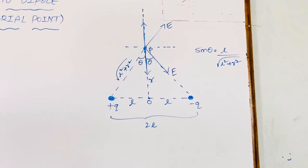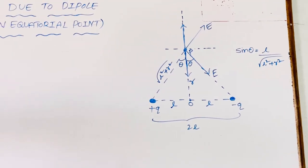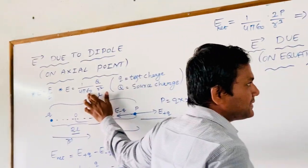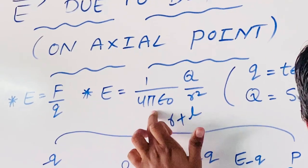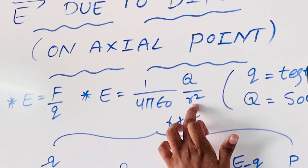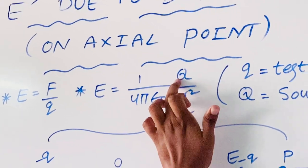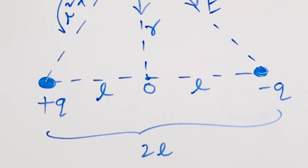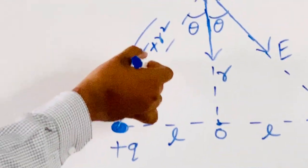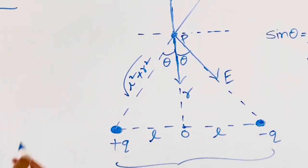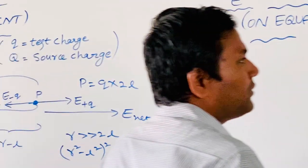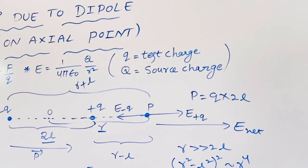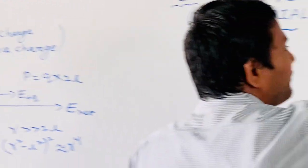In terms of magnitude, that can be calculated according to the formula discussed in the previous video: E = 1/(4πε₀) · Q/R². In this formula, Q is the magnitude of either plus Q or minus Q, and R is the distance square root of L² plus R². Since Q and R² are both the same for both charges, the electric field magnitude is automatically the same. That is why we have labeled this electric field accordingly.